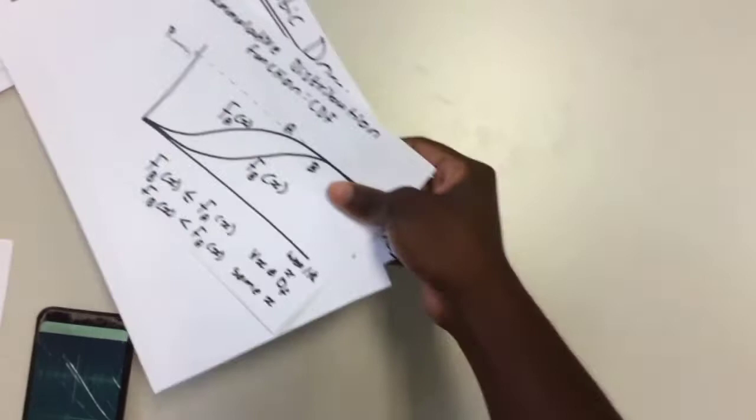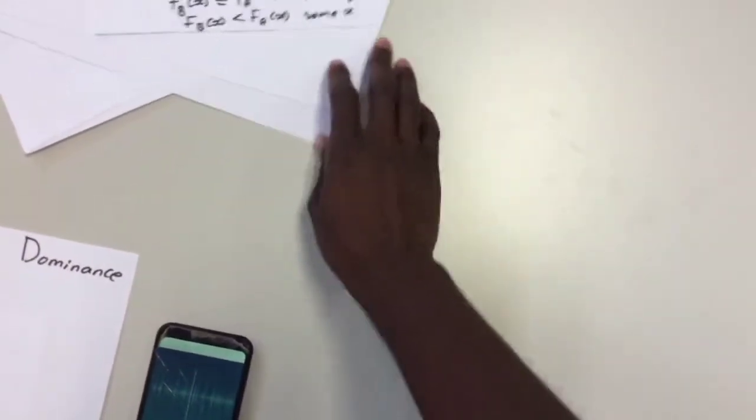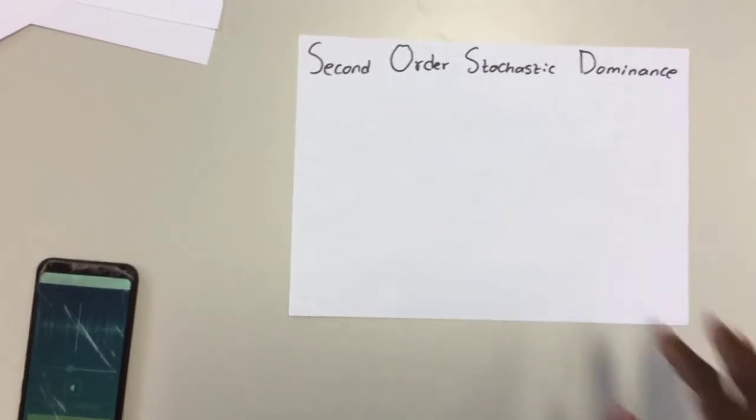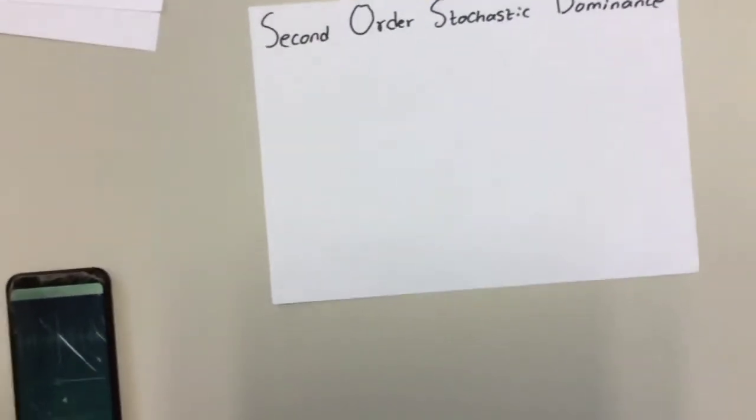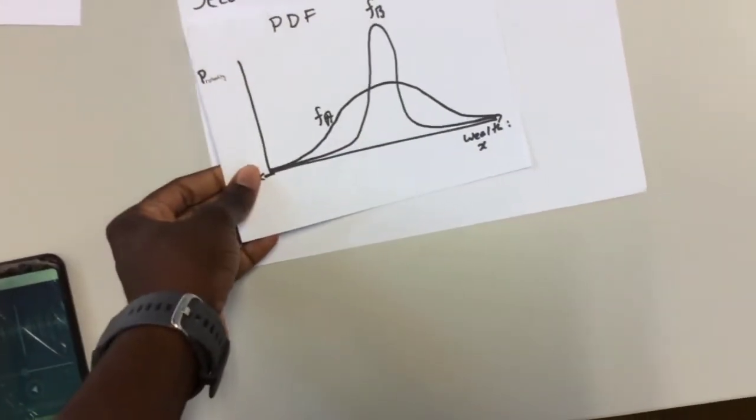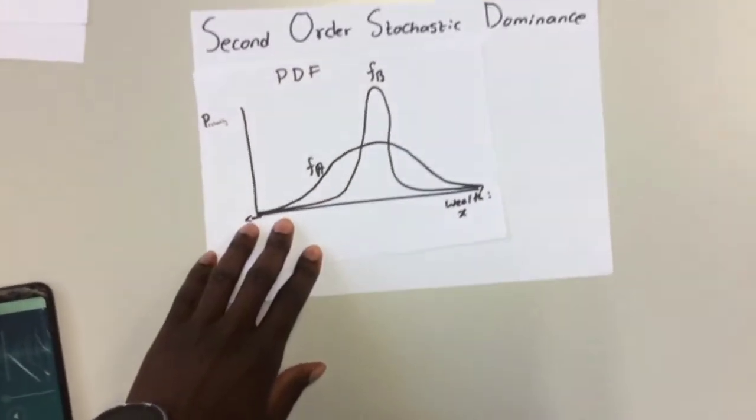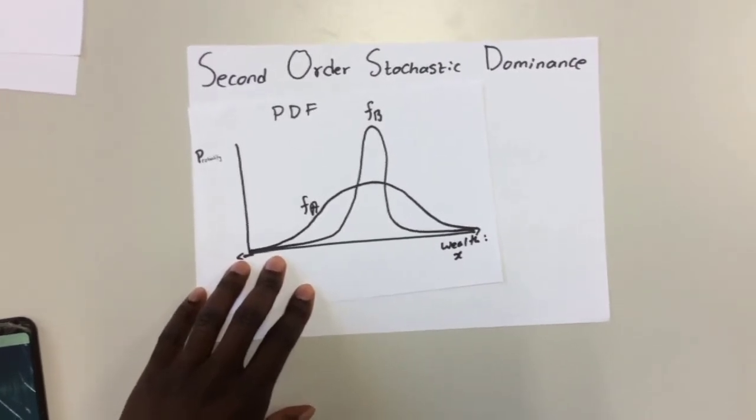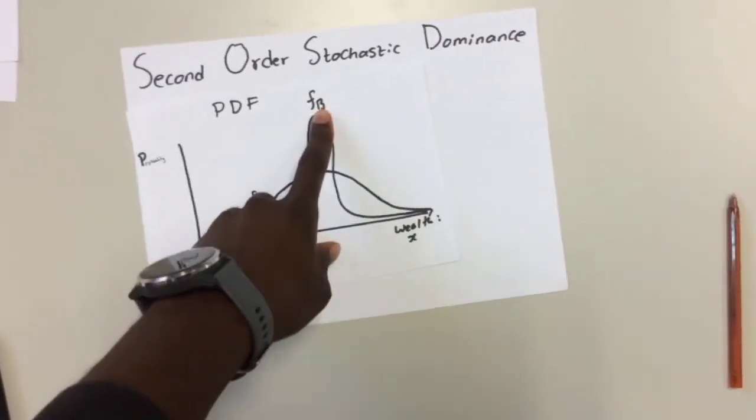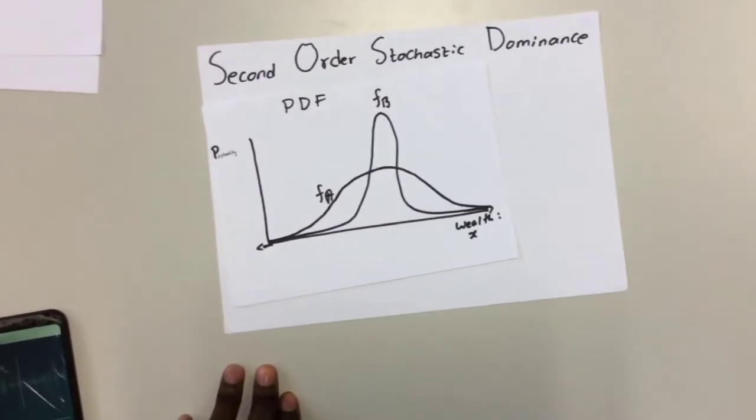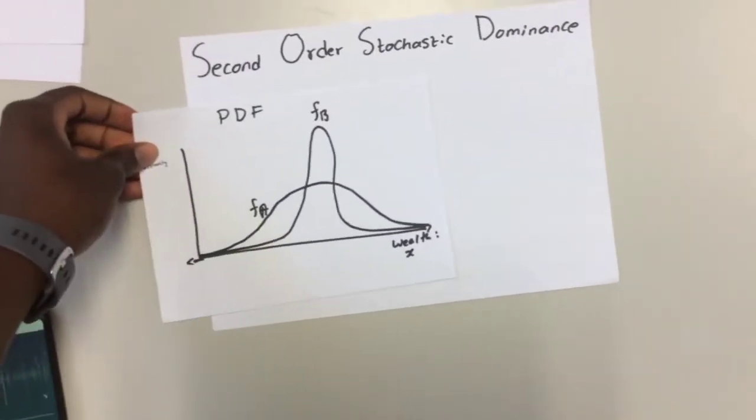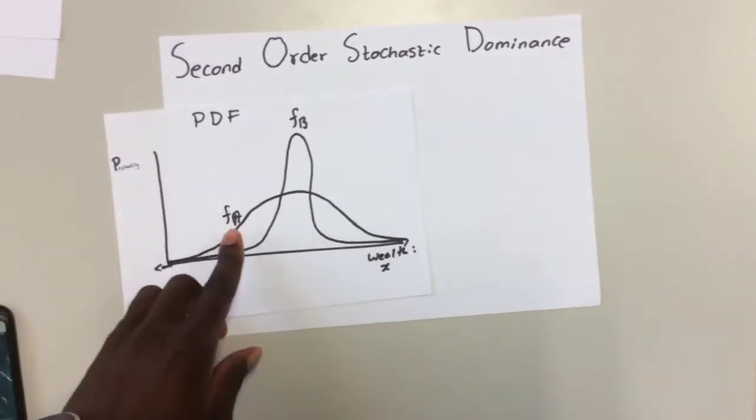Suppose now that you have something which is a little bit more complicated. As you can see here, we have the following distribution where you have to choose one of them. Which one would you choose, A or B? As you can see by this probability density function, A is more volatile than B and B is less volatile than A.